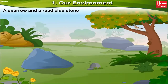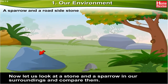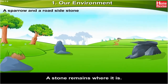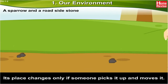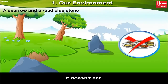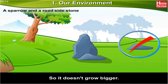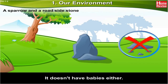A sparrow and a roadside stone. Let us look at a stone and a sparrow in our surroundings and compare them. A stone remains where it is — its place changes only if someone picks it up and moves it. It doesn't eat, so it doesn't grow bigger. It doesn't have babies either.